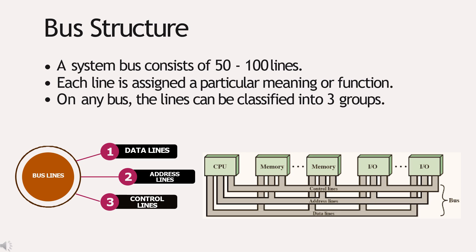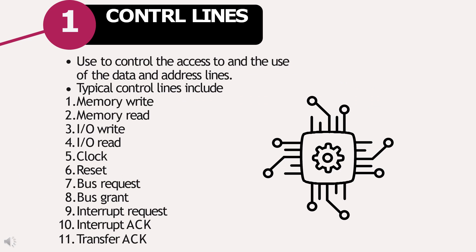Bus Structure: A system bus consists of 50 to 100 lines and each line is assigned a particular meaning or function. On any bus, the lines can be classified into three groups that are data lines, address lines, and control lines.